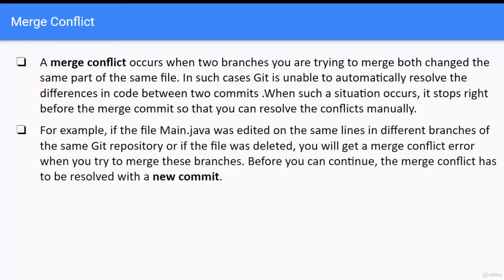For example, if the file main.java was edited on the same lines in different branches of the same git repository, or if the file was deleted, you will get a merge conflict error when you try to merge these branches. Before you can continue, the merge conflict has to be resolved with a new commit.